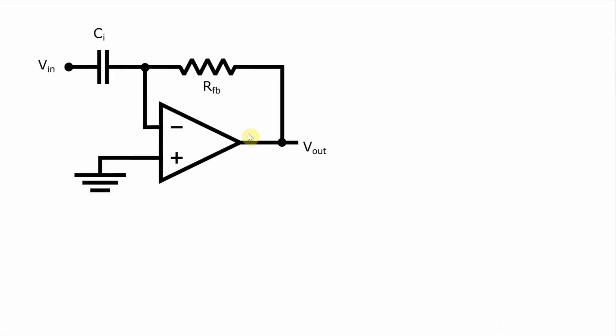So we've got the differentiator here, and what we want to figure out is what the relationship between the output and the input are. Because no current flows into the inverting terminal, the current going through C1 is going to be the same as the current going through this feedback resistor.